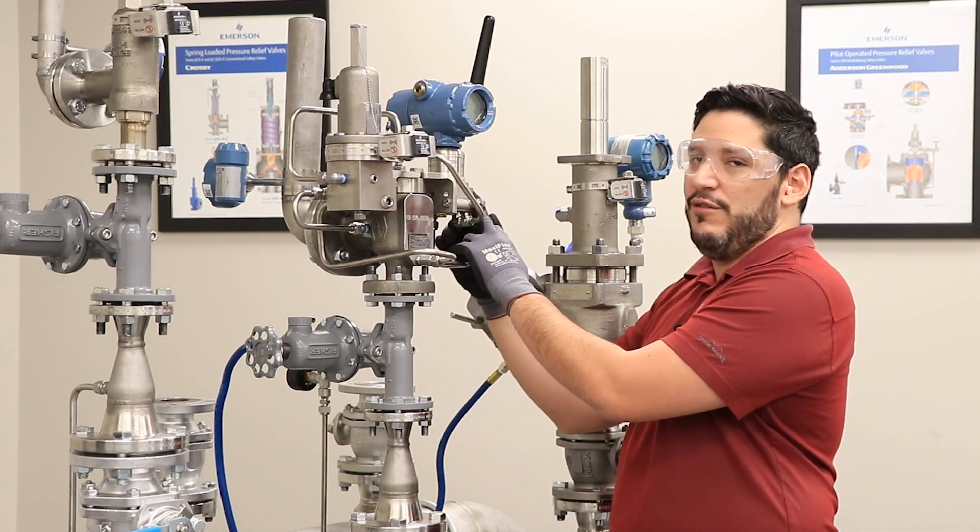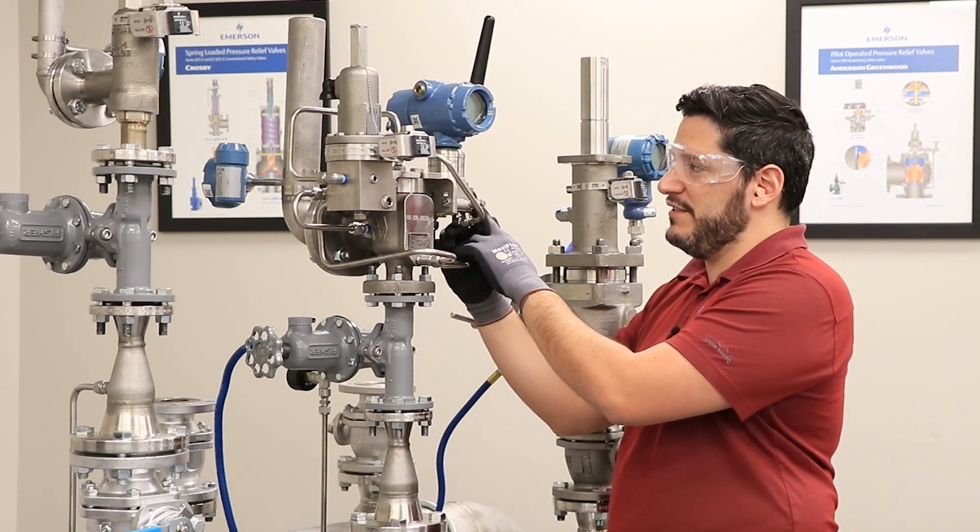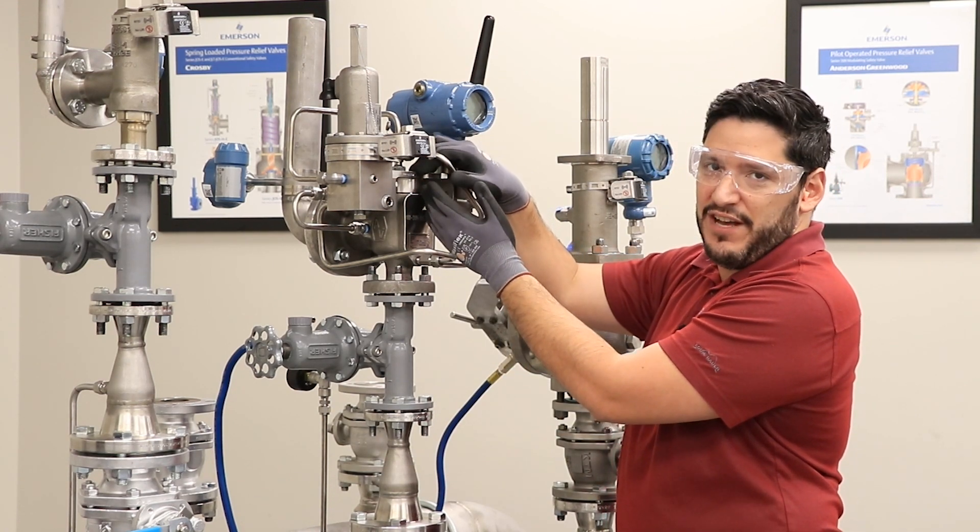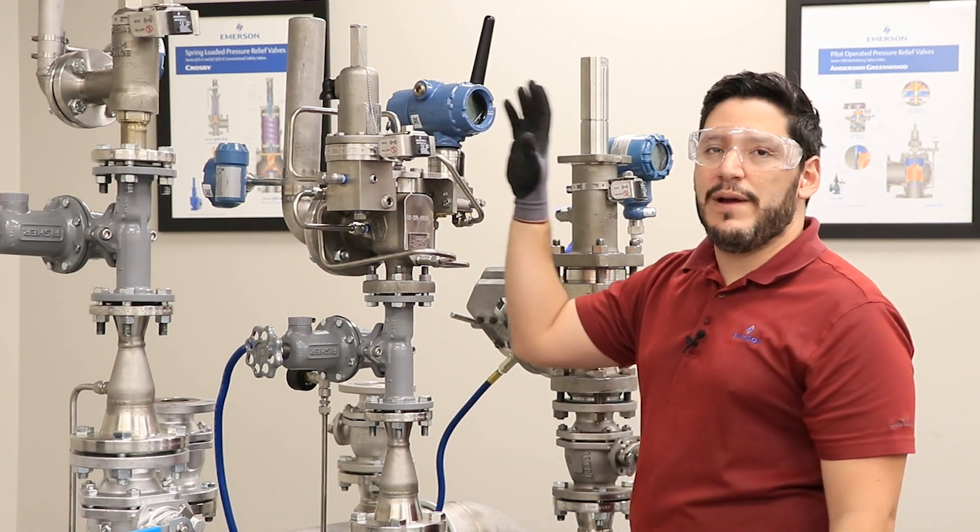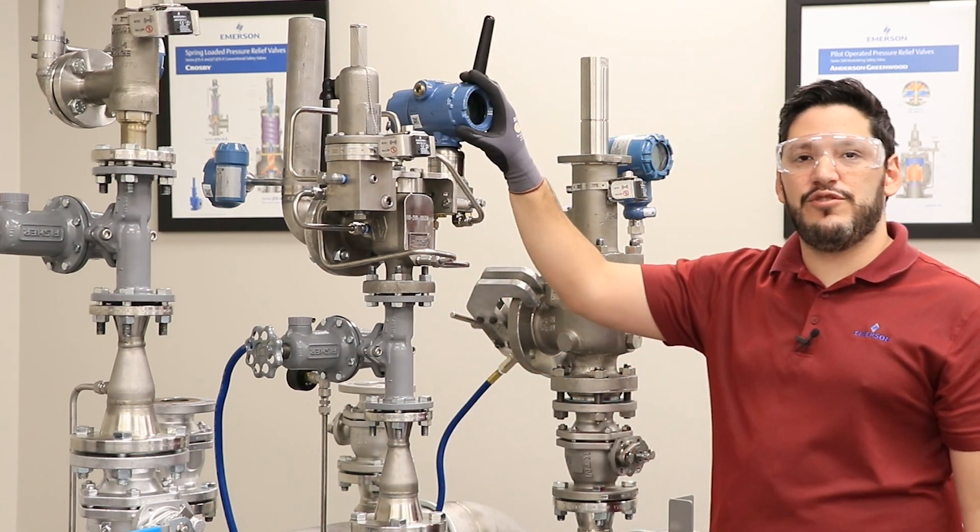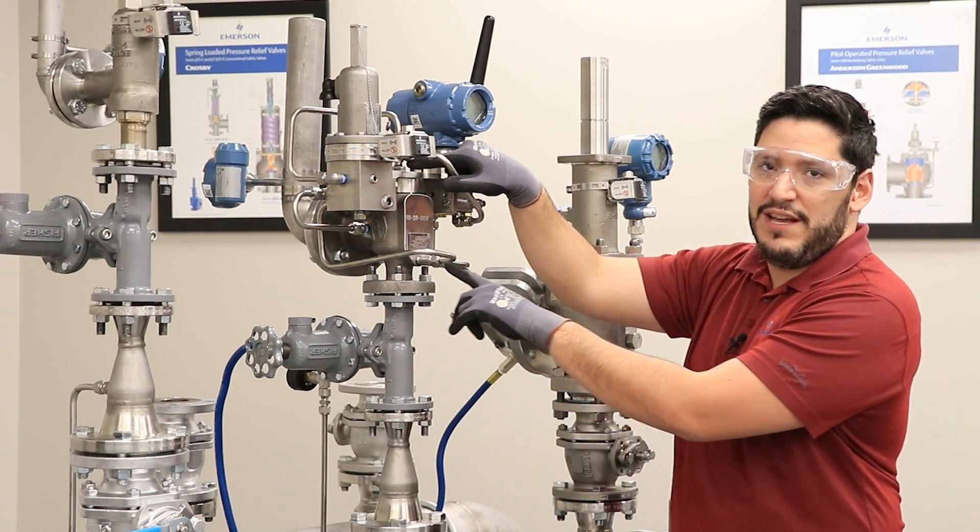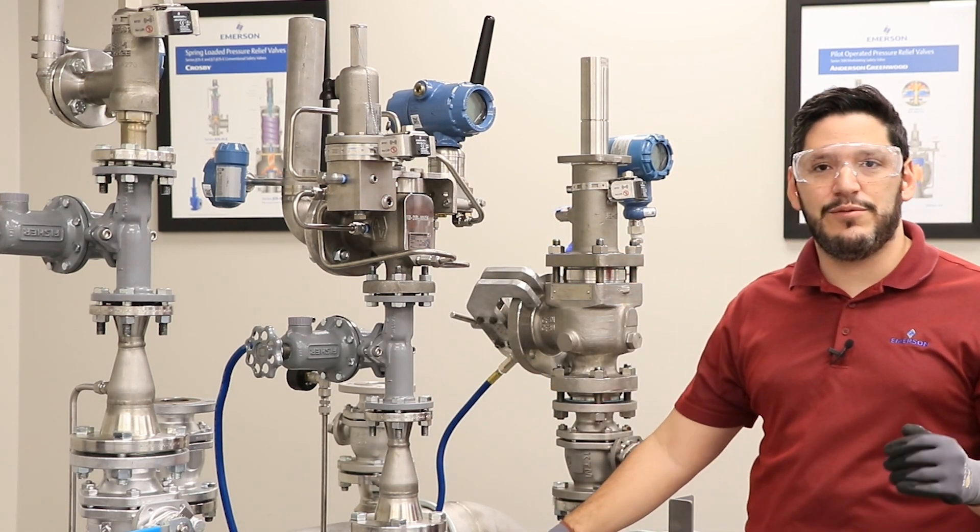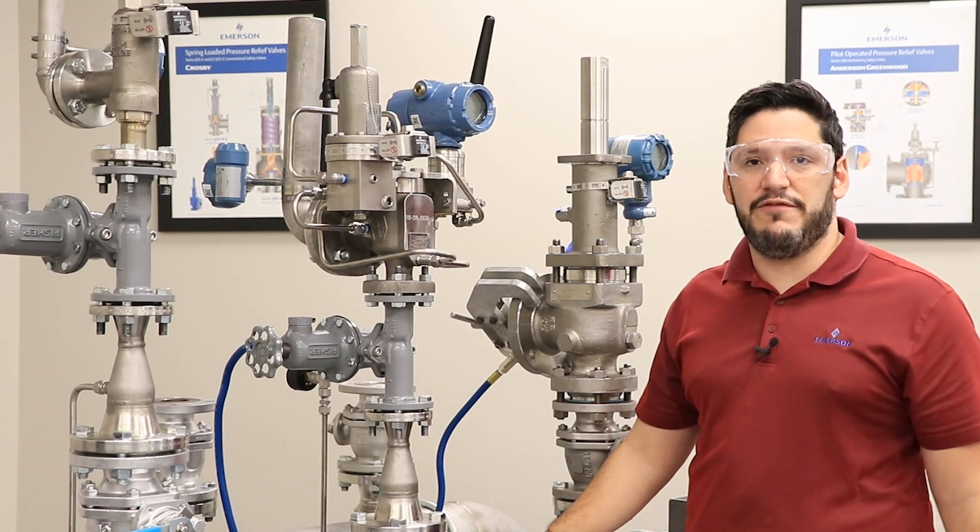And we take the low side of the differential pressure transmitter into the dome on top of the main valve. There is a direct correlation between the differential pressure between these two points and the valve lift percent. There is also a direct correlation between valve lift percent and flow.